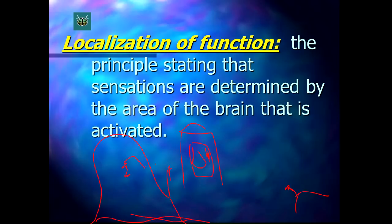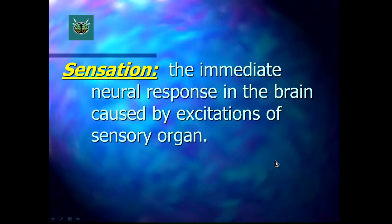So, I know I wrote over all the localization of function. But let's talk about that really quick here. So, the principle of stating that sensations are determined by the area of the brain that it's activated. So, you take a look at the occipital lobe. That's where vision actually occurs. That's the localization of that function of vision. Around the temporal is hearing. On the top is your parietal lobe and such. You have your motor skills. That's the location. So, again, sensation, immediate neural response in the brain. And it's caused by elicitation of a sense of...